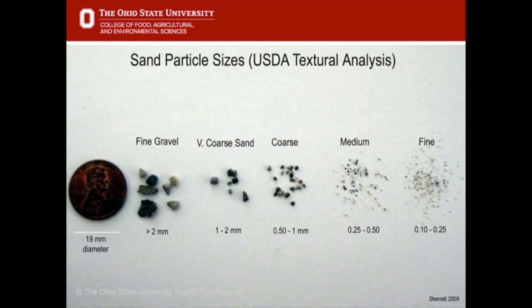Sands are classified by the size of their particles. As shown here, fine gravel contains granular particles greater than 2 mm in diameter, while fine sands have much smaller diameters of 0.1 to 0.25 mm. As a general rule of thumb, medium, coarse, uniform sands are used on native soils, with slightly smaller particles introduced on sand root zones. Finer particles of sand are used on sand root zones to ensure surface stability.